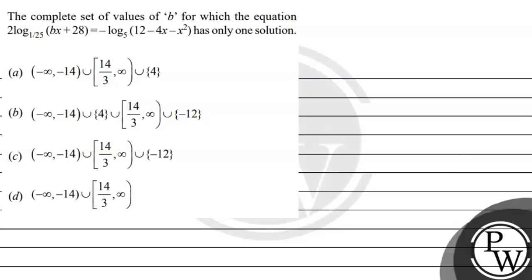Hello, let's see the question. The question says: find the complete set of values of B for which the equation 2 times log base (1/25) of (Bx + 28) equals minus log base 5 of (12 minus 4x minus x²) has only one solution.